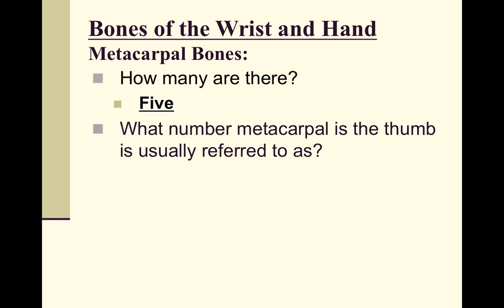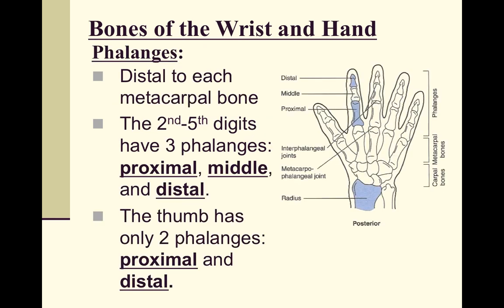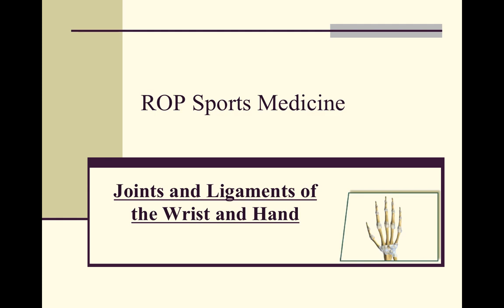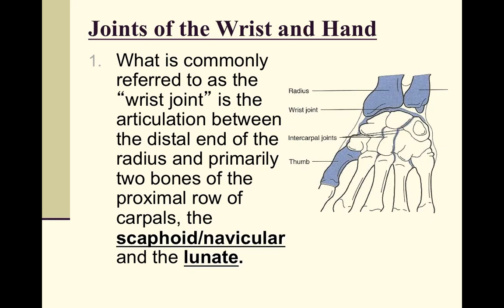There are five metacarpals, just like the five metatarsals in the foot, numbered one through five starting with the thumb as the first metacarpal. The phalanges are also organized the same as the foot: each of the four fingers has a proximal, middle, and distal phalanx, while the thumb has only a proximal and distal phalanx, giving a total of 14 phalanges in the hand.